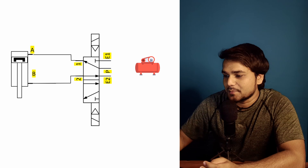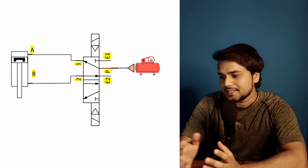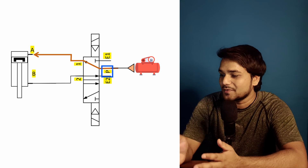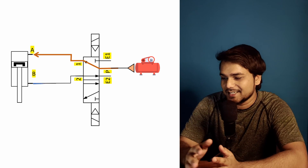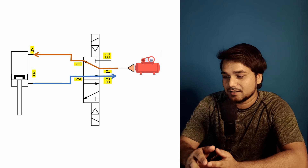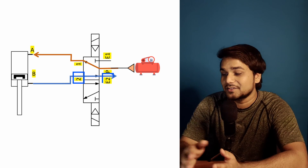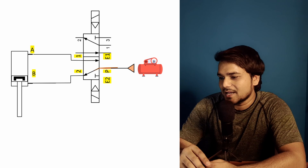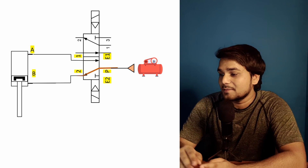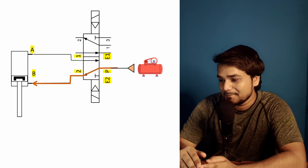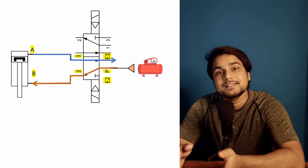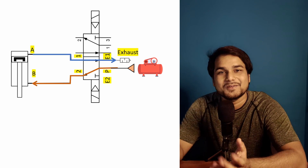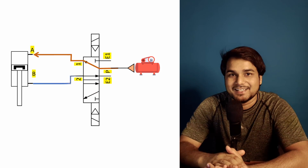Now let's connect the compressed air supply to valve port P. Compressed air flows from port P through valve port 1 into cylinder port A, and at the same time the air from the other side of the piston passes from valve port 2 to exhaust port E2, releasing and letting the piston come down. Now switching the valve position changes the direction: compressed air supplies through cylinder port B and cylinder port A is directed to the exhaust port, so the cylinder goes up.